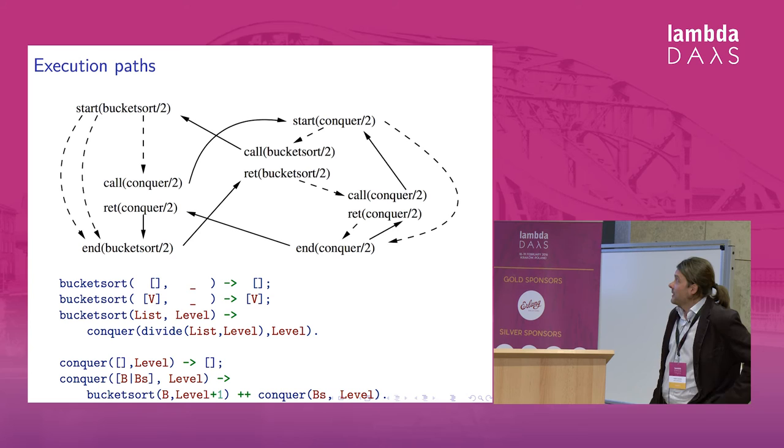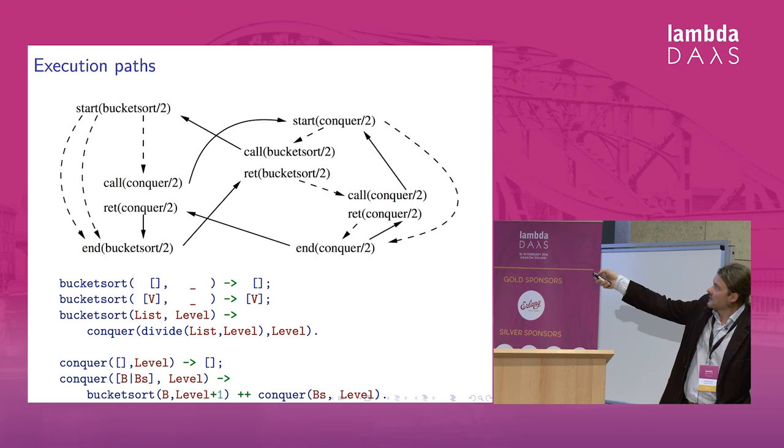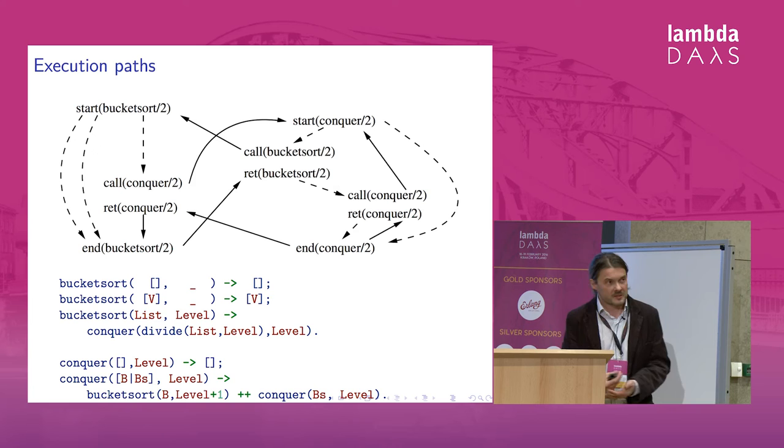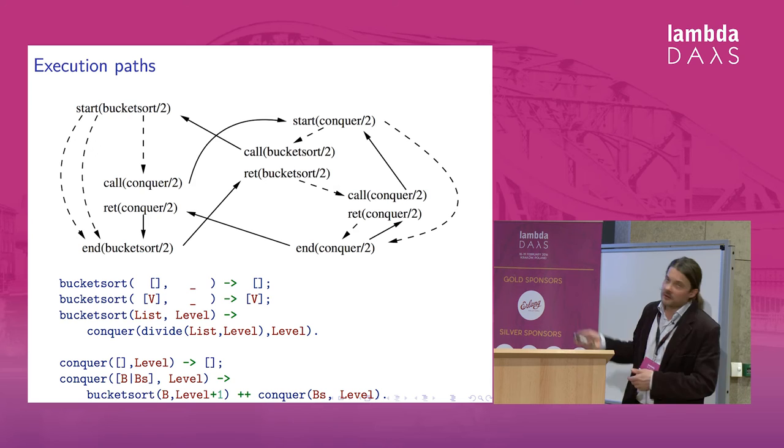You can have a similar picture for the bucket sort. Again, you start bucket sort. Let's take the third clause. Start bucket sort, call conquer, go to conquer. And then from conquer you can call bucket sort, go back to bucket sort. And after the end of bucket sort, you go back to the return point of the function call. And then call conquer again. You can complete conquer somehow. And this is the end of the execution path. So these are the kind of execution paths we try to build up from the source code. And we try to analyze these execution paths. And if we can find the right call nodes in these execution paths, then we have a good candidate for divide and conquer.